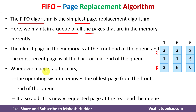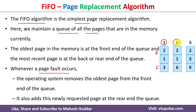Whenever a page fault occurs — a page fault is a situation where the process is requesting a page which is not present in the primary memory — let's assume the process is requesting page number 1. It is already present in primary memory, so there is no page fault. Next, the process is requesting page number 6, which is not present, so there is a page fault. Whenever a page fault occurs, the page at the front end will be removed and the new page put in its place.